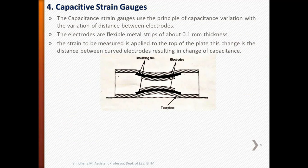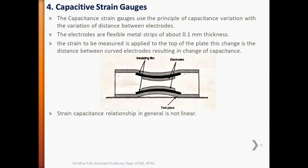Next we will discuss capacitive strain gauges. The figure shows a capacitive strain gauge. It uses the principle of variation of capacitance with variation of distance between electrodes. The electrodes are flexible metal strips of about 0.1 mm thickness. The strain to be measured is applied to the top of the plate, which changes the distance between the curved electrodes, resulting in a change of capacitance. The strain-capacitance relationship in general is not linear, but variation in dimensions and shape allow gauge characteristics to be chosen so as to match the range of capacitance to be measured with a good degree of accuracy.